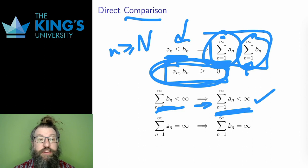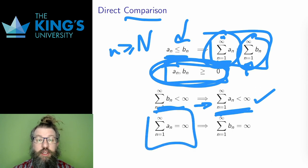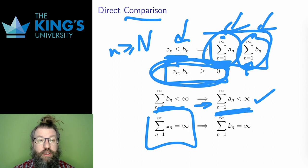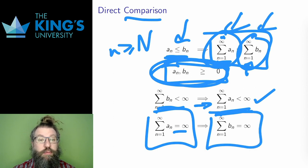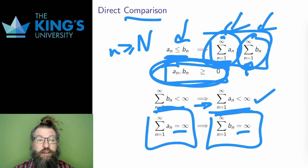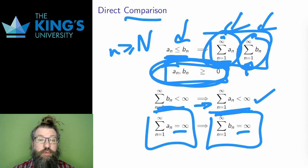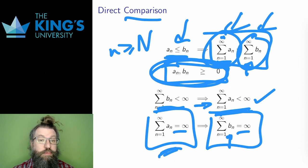Likewise, if the smaller series is divergent, then the larger series must also be divergent. I write equals infinity here to mean divergent — to mean that it adds up to larger and larger numbers. Infinity is still not a number, but this is a convenient shorthand and pretty standard way to write. If some numbers add up to infinity, then a larger set of numbers should also add up to infinity.